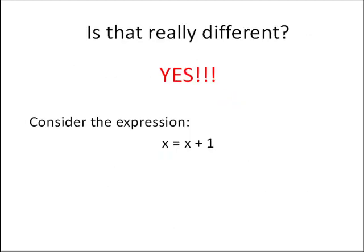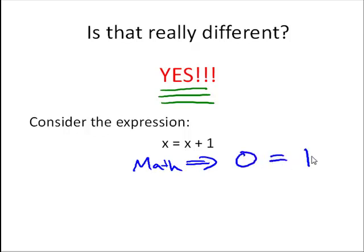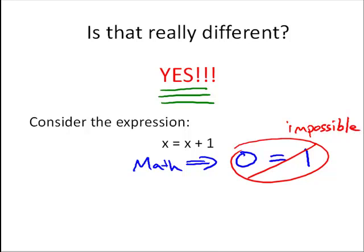So let's talk more about that. Is that really different? Yes, it's very different, and it's very important to really understand this difference. So let's consider the expression x equals x plus 1. In math, this expression reduces to 0 equals 1, and that's impossible. So it's not even a valid mathematical expression. In computer programming, this is a common expression, and it's valid. What we're saying here is take the current value of x, add 1 to it, and assign that to the same variable x.